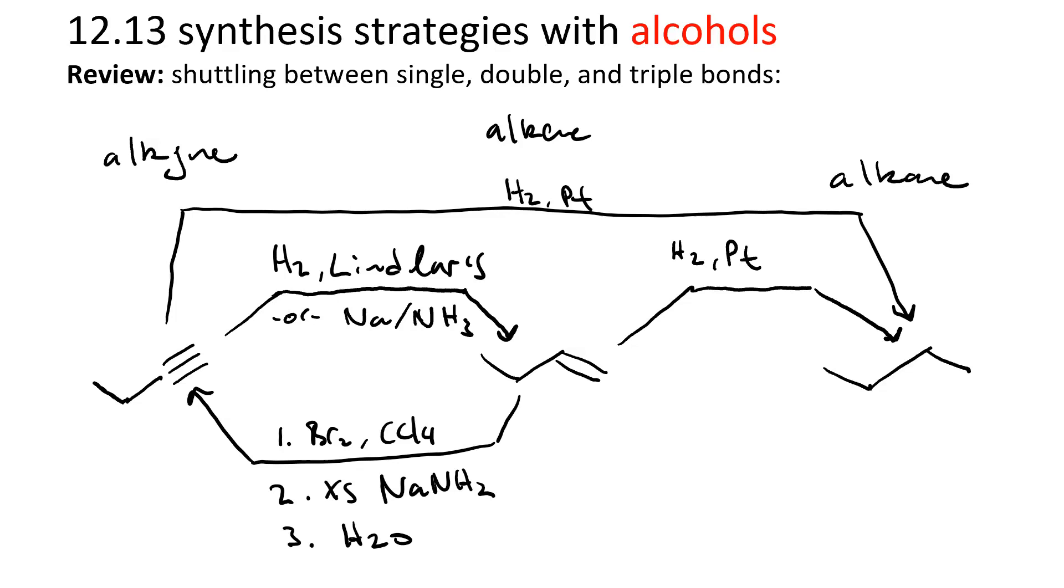To go from an alkane to an alkene, we'd also have to do a two-step process. First, we'd have to do radical halogenation, and we'd get better regioselectivity using bromine. And second, we would do tert-butoxide to do the Hoffman elimination.